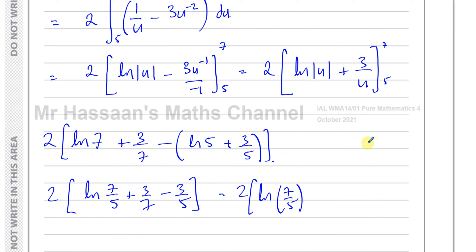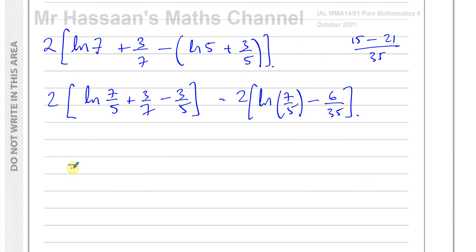So this is going to be 2 times ln(7/5), and that's 3/7, that's 35. 35 times 5, that's 15. Minus, that's 7, that's going to be 21. So you have -6/35. So now we can multiply by the 2. So you have 2ln(7/5) - 12/35.